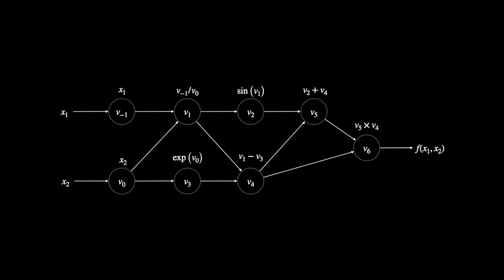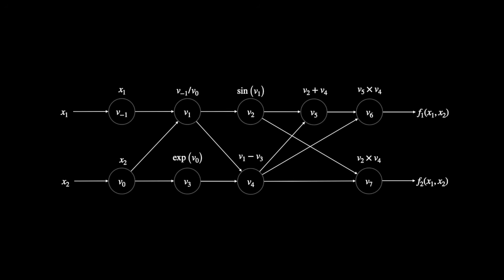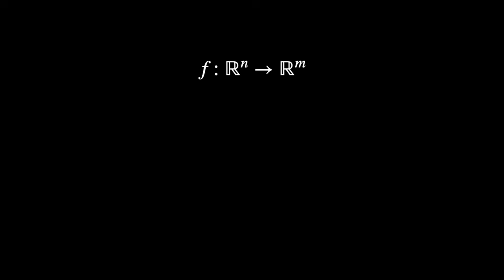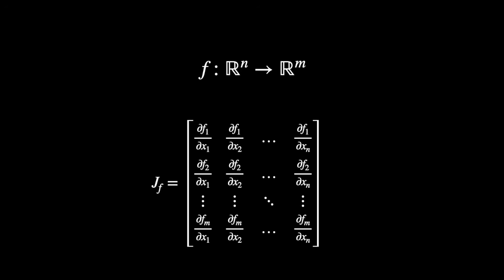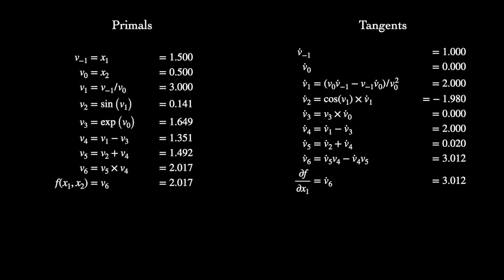This example function only has a single scalar output. Suppose it had multiple. Forward mode autodiff allows us to compute the partial derivatives of each of these outputs, with respect to an input variable, all in a single forward pass, which is great. The catch is that we have to run a separate forward pass for each input variable of interest. For this example function, we'd have to follow the same procedure again to get partials with respect to x2. Consider general functions from rn to rm. Each pass of forward mode autodiff produces one column of the corresponding Jacobian. This starts to give us a hint about when we might like to use forward mode. We'll see that, relative to reverse mode, forward mode is generally preferred for computing Jacobians where n is much less than m. That is, we have few inputs and many outputs.